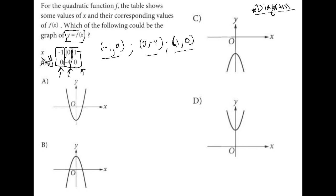So choice A, negative 1, 0 could be here. 0, negative 4 could be here and 1, 0 could be there. So I like choice A.